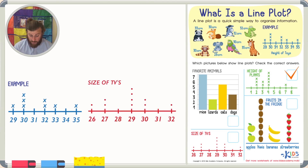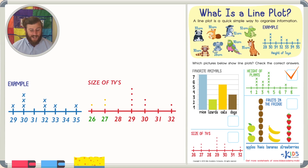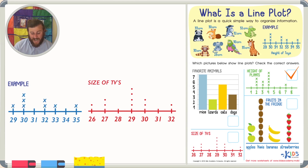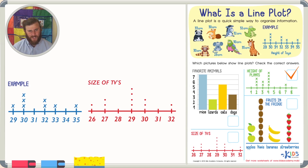The next picture has numbers on the bottom and the title 'Size of TVs.' One TV is 26 and two TVs are 27, represented by two dots. Even though it doesn't have X's like our example, it does have dots to represent each TV. Whether it's a dot or an X, they're set up the same way — numbers on the bottom, each dot or X represents just one TV. This is a line plot.